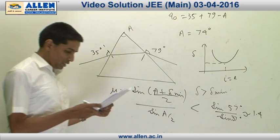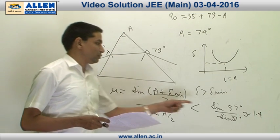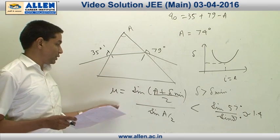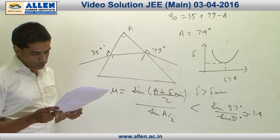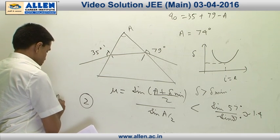The question asks the closest value of maximum possible value of the refractive index. The closest value of the maximum possible value of the refractive index would be 1.5. Of the four options, the best possible option is 2. Answer is 2.